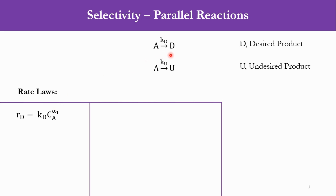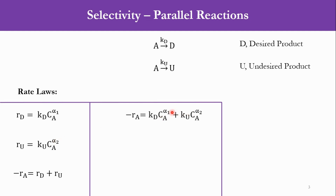For the desired reaction, we have defined the order as alpha 1, and for the undesired reaction, the order is defined as alpha 2. So R_U is equal to K_U times C_A raised to the power alpha 2. The sum of R_D and R_U is equal to the rate of disappearance of A, which is our single reactant in the system.